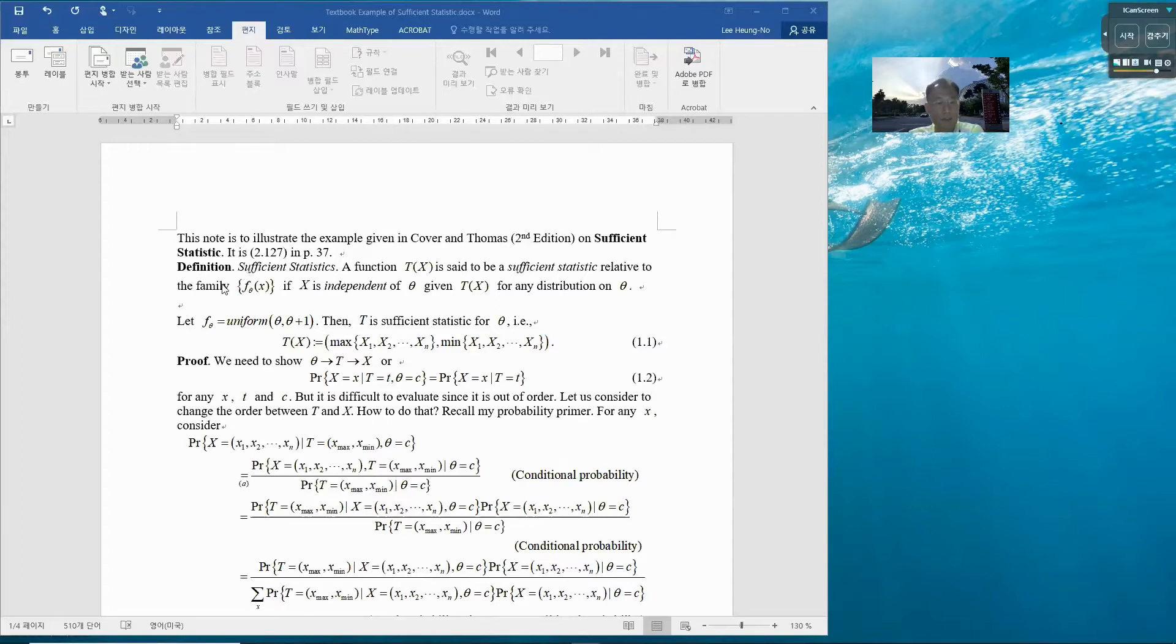Here is the definition of sufficient statistics: a function T(X) is said to be a sufficient statistic relative to the family of distribution parameterized by theta, if X is independent of theta given T for any distribution on theta. That's the definition.